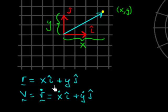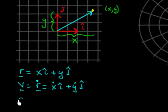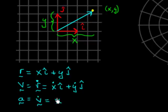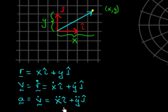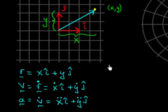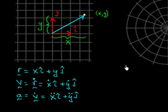To take the time derivative of position, you just take the time derivative of the components. And finally, we can write the acceleration in terms of the time derivative of velocity. If we write that into components, it's the second time derivative. So now what we're going to do is move to polar coordinates.